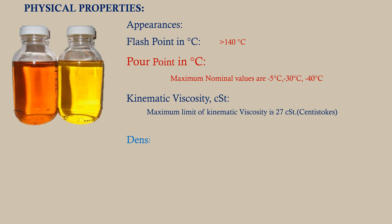Density in grams per cubic centimeter: higher density of transformer oil means higher viscosity, which in turn affects heat dissipation. The normal range of density should be 0.85 to 0.89 g per cubic centimeter.